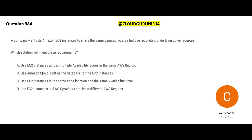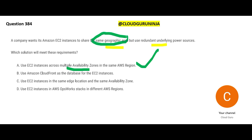You have EC2 instances and you want to share the same geographic area - for example, your instances are in the Hyderabad region. You want to use the same region but you want some sort of redundancy built in under the power sources. In that case, you should not be on one data center; you should be splitting across multiple AZs in the same region. That is what you require.